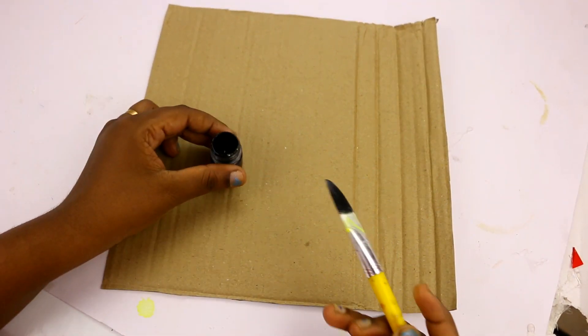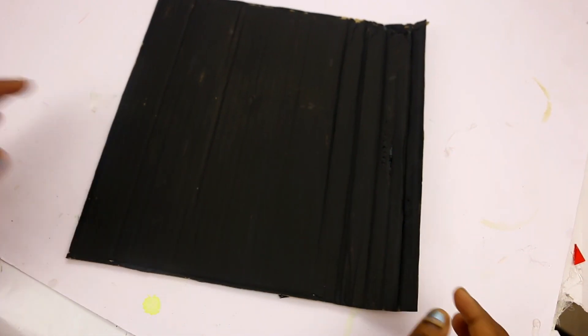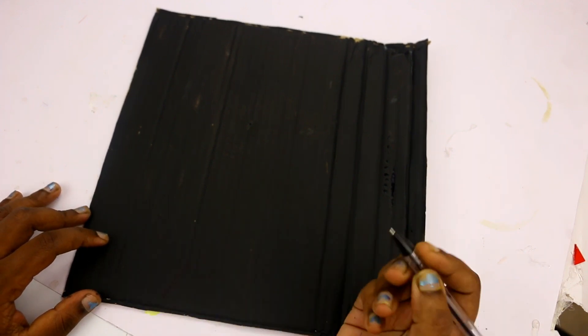First, we will take a cardboard and cut it in a rectangle shape. We will paint it with color. I will use black color.